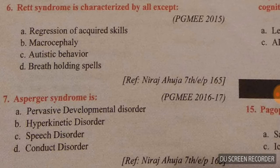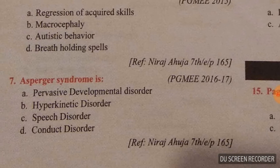Question number six: Rett syndrome is characterized by all except. In Rett syndrome there is no macrocephaly, but there is regression of acquired skills, autistic behavior, and breath-holding spells. They are asking 'except', so the answer is macrocephaly, option B.